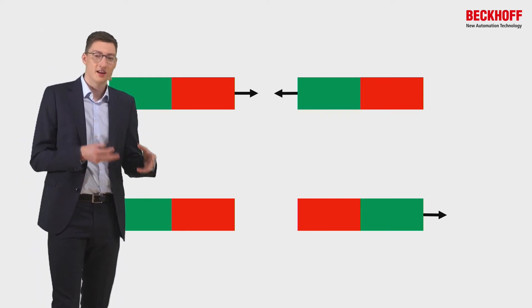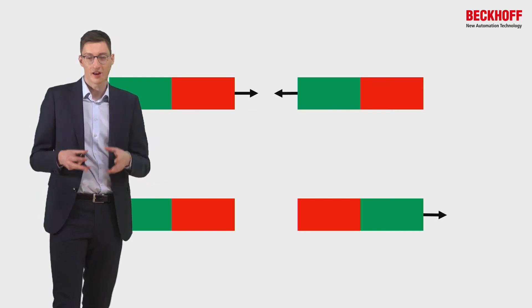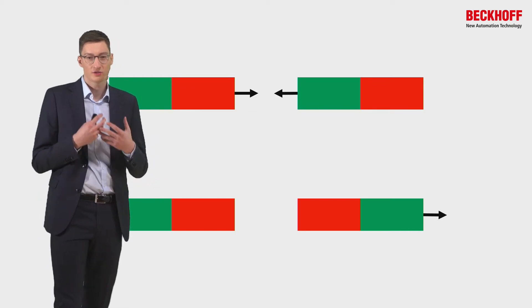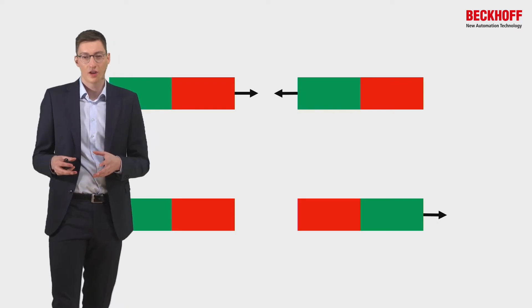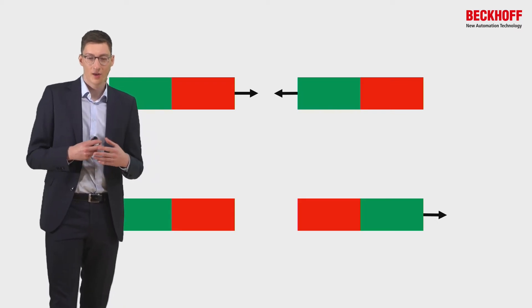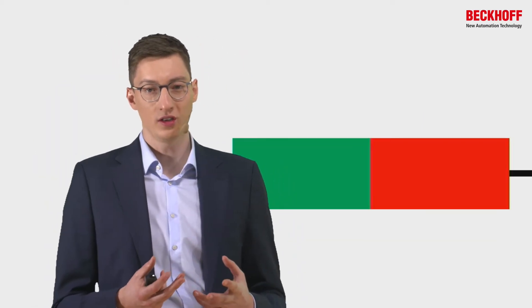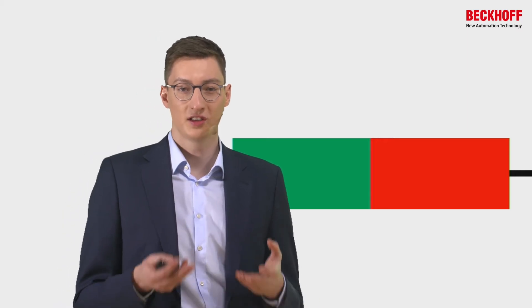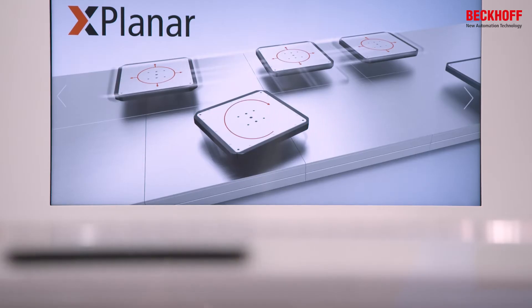We are replacing one of the magnets from school with the Xplanar tile, which generates an electromagnetic field. On the other side, we have the Xplanar mover, and the Xplanar mover contains strong permanent magnets. Once the tile is powered up and switched on, the electromagnetic field is generated and the mover lifts off and floats over the tile, as you can see in this video.